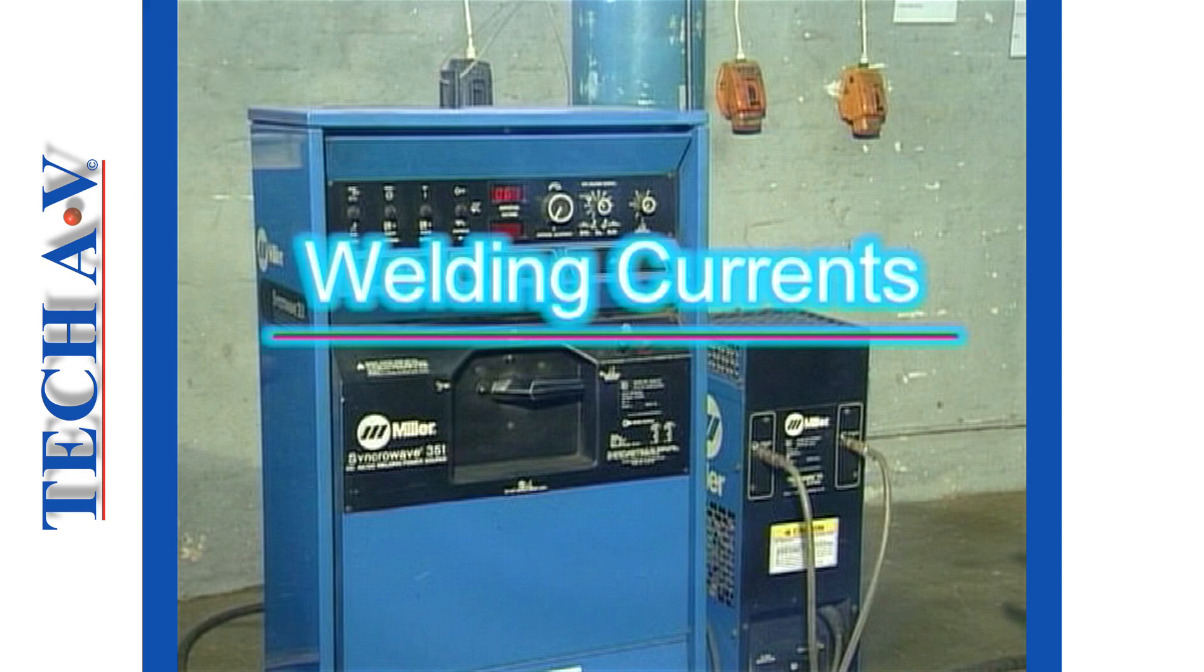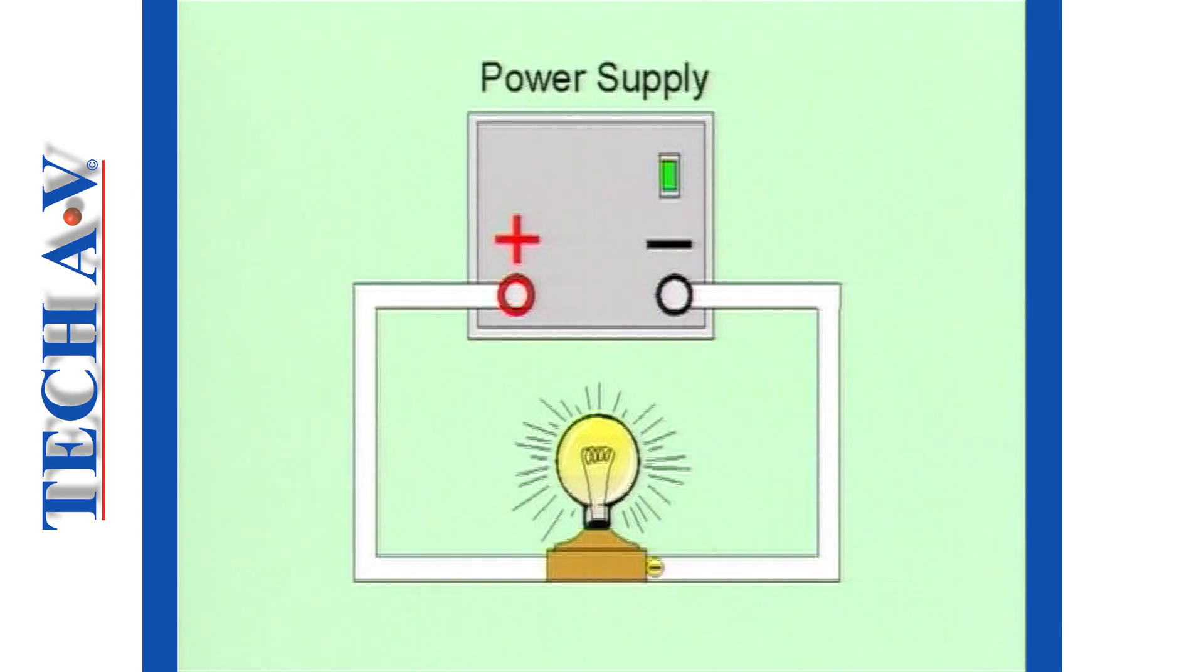An important factor to understand with the TIG process is that concerning welding currents. In any electrical circuit, electrons, which are negatively charged, flow from a negative pole through the circuit and back to the positive pole of a power source.